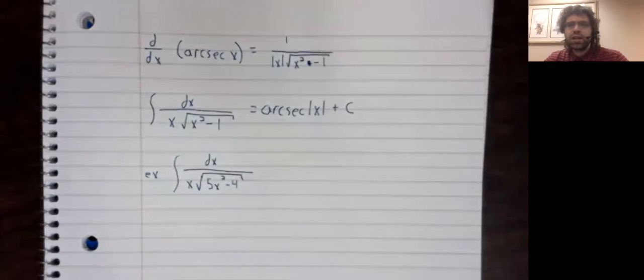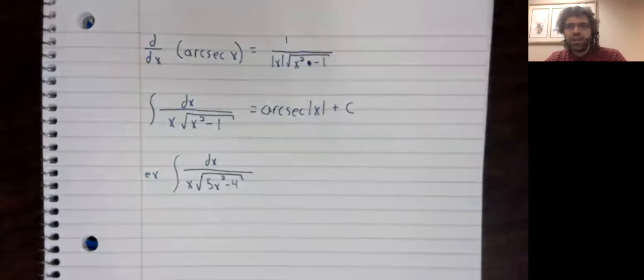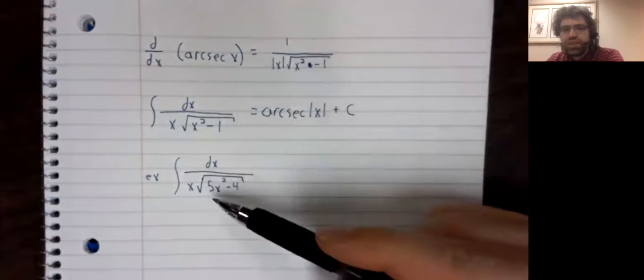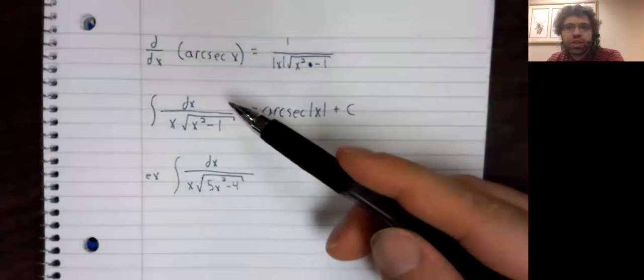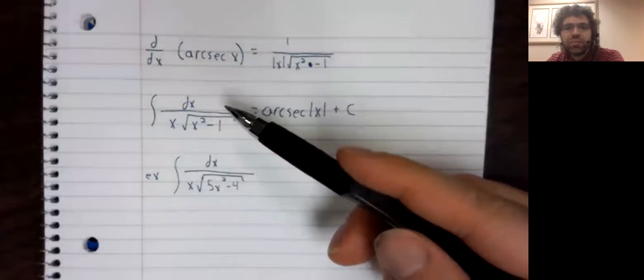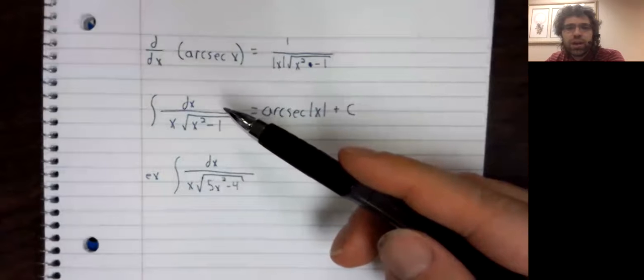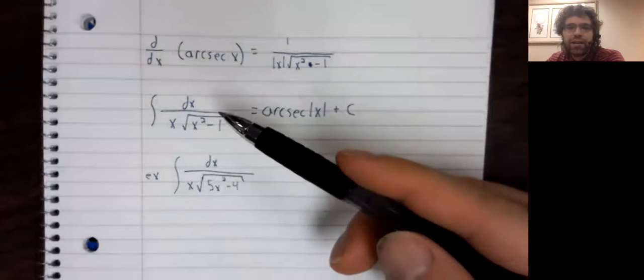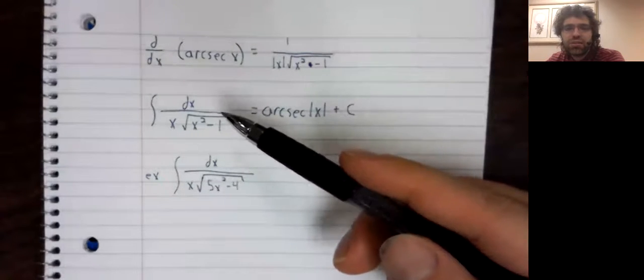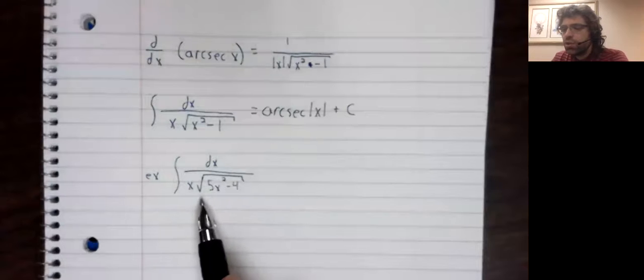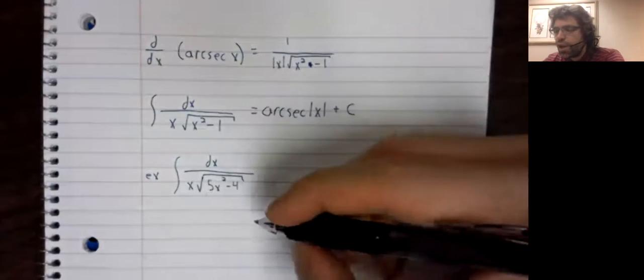Sometimes it's not obvious how to start these problems. But this looks so much like an arc secant. I don't even know what I'd try other than this.